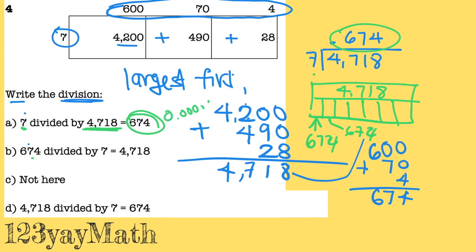And then 674 by 7 again — it will make a bigger number, so that's not it. And then not here. And then D says 4,718 divided by 7 is 674. Yay! We found it!